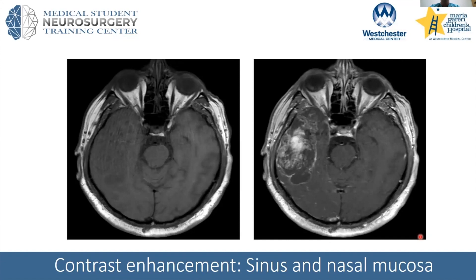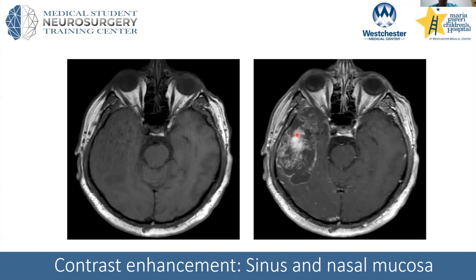Another key MRI feature is contrast enhancement. The patient is given a bolus of gadolinium, a contrast agent that highlights lesions with breakdown of the blood-brain barrier. On the left is a pre-contrast image; on the right is post-contrast — you can see the aggressive lesion lighting up. A useful way to determine whether a scan has contrast: the large veins light up — the sagittal sinus in the back is very bright on post-contrast — and the nasal mucosa also enhances. Sometimes studies get mislabeled, but checking the veins and nose will tell you.